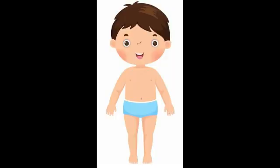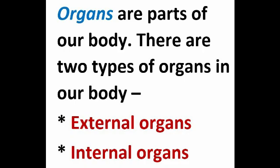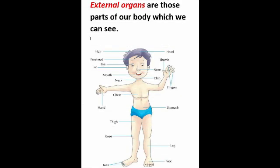As we know, our body works like a machine — it has many parts, which we also call organs. Some organs can be seen and some cannot be seen. The organs which can be seen are called external organs. Now let me explain the difference between external and internal body parts.